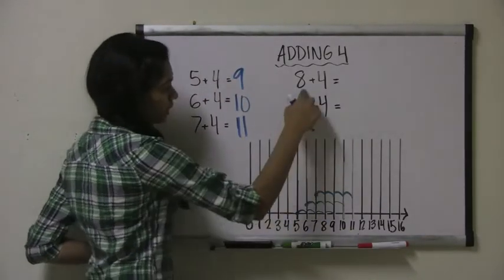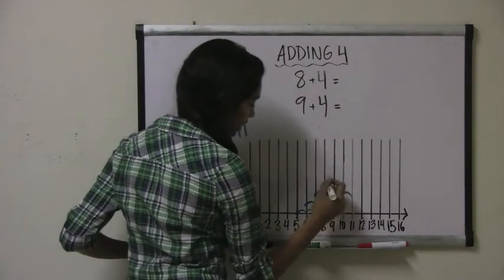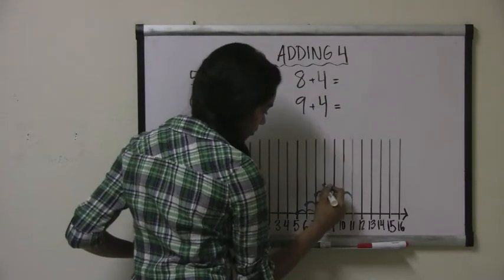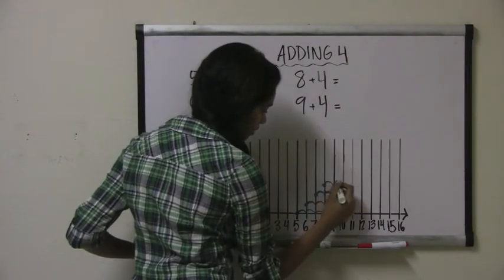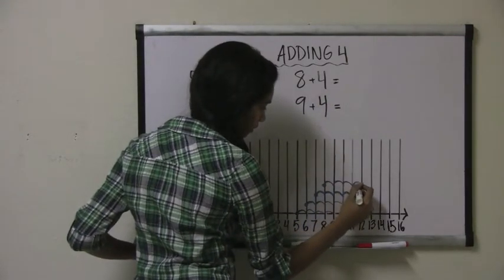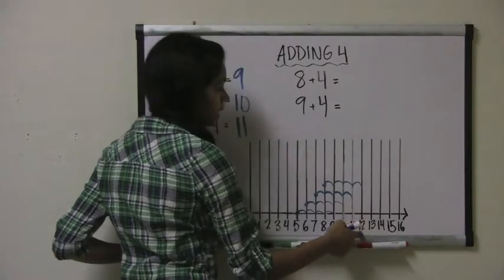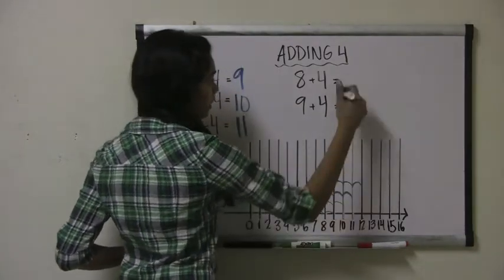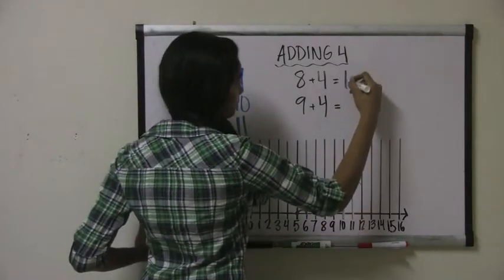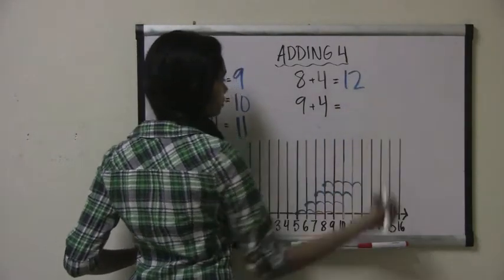Let's try 8 plus 4. This time we start with the number 8 and jump 4 spots: 1, 2, 3, 4. We land on 12, so 8 plus 4 equals 12.